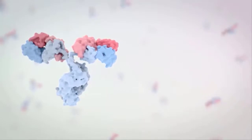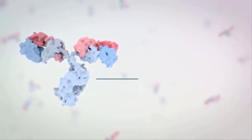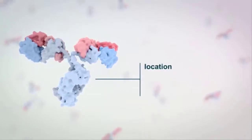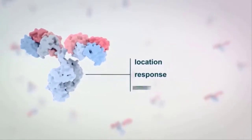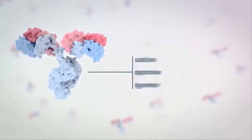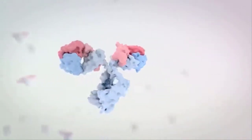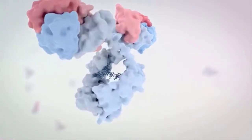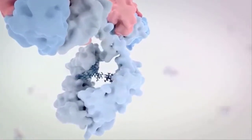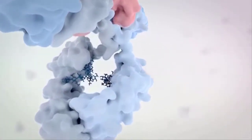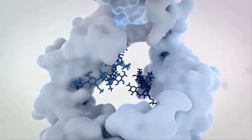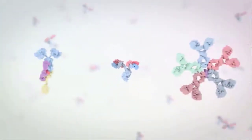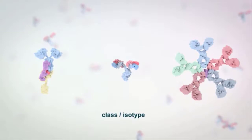The heavy chain constant region determines where in the body antibodies are located, what kind of immunological response an antibody can mediate, and the oligomeric state of the antibody. Carbohydrate chains are attached to the heavy chain constant region, sitting between the two heavy chains, and are associated with stability and effector function. Heavy chain constant regions also determine the class of the antibody, known as the isotype.